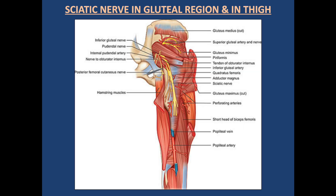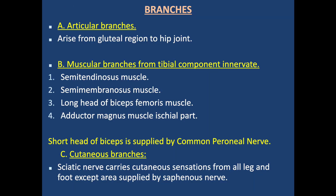This diagram shows the sciatic nerve in the gluteal region and thigh. The long head of biceps femoris is cut to show the full length of the sciatic nerve and its division at the apex of the popliteal fossa. Posterior or superficial relations: In the pelvis, piriformis is posterior. In the gluteal region, it is covered by gluteus maximus muscle. In the thigh, it is crossed over by the long head of biceps femoris muscle.